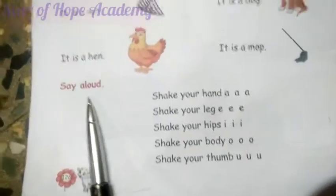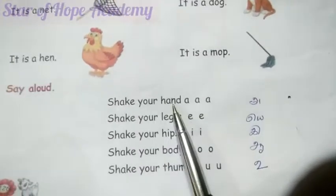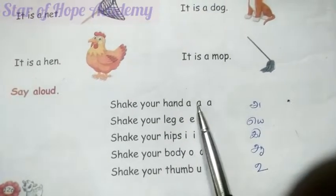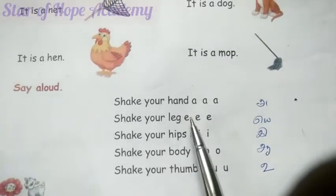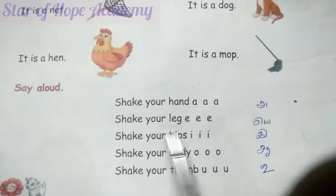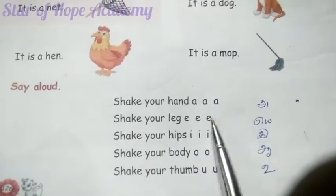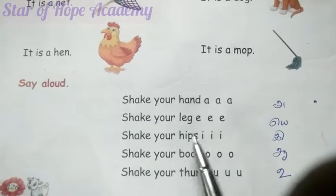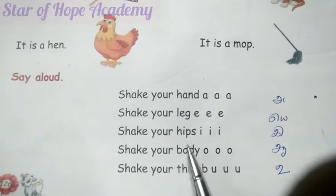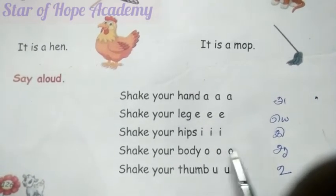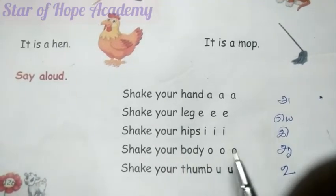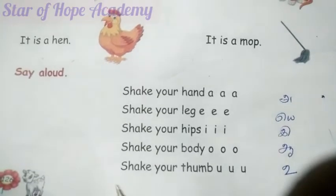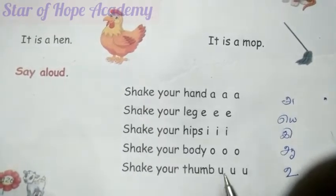Say aloud. Shake your hand — A-a-a. Shake your leg — E-e-e. Shake your hips — E-e-e. Shake your body — A-a-a-a. Shake your thumb — O-o-o-o.